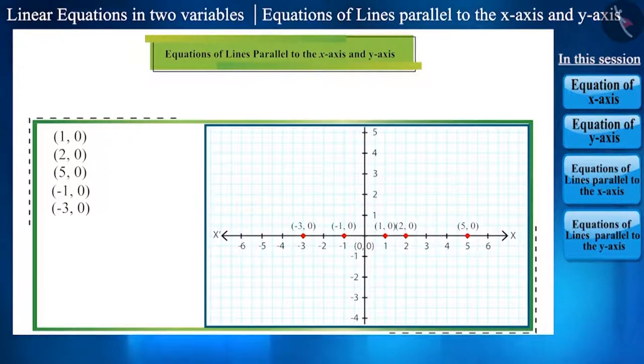Hence, we can say that the points whose y-coordinate is 0, or which is in the form of (x, 0), will lie on the x-axis. The line formed by all the points in the form of (x, 0) is the x-axis.